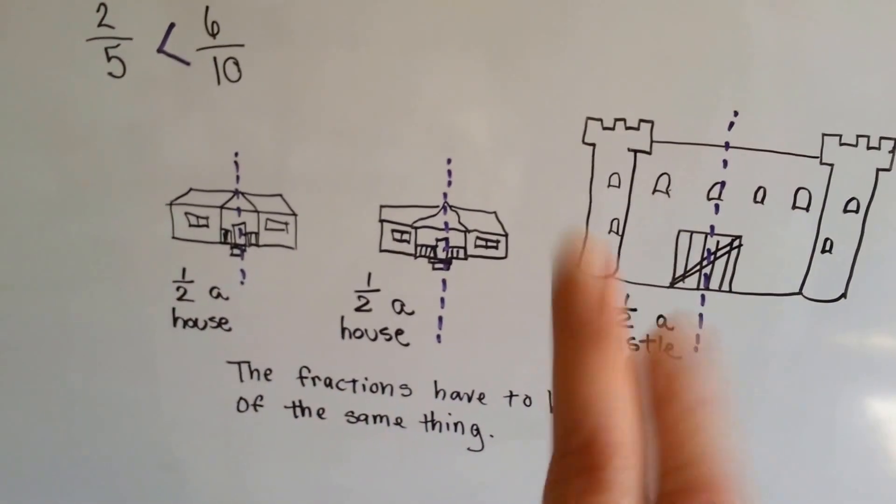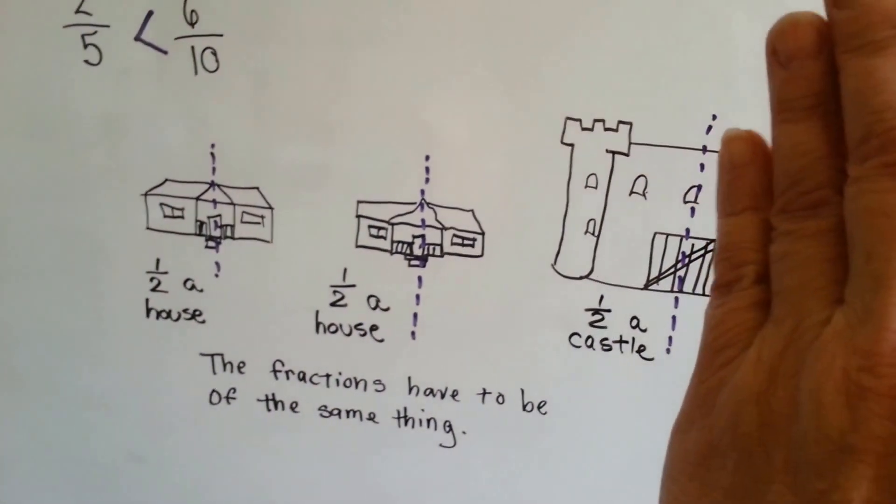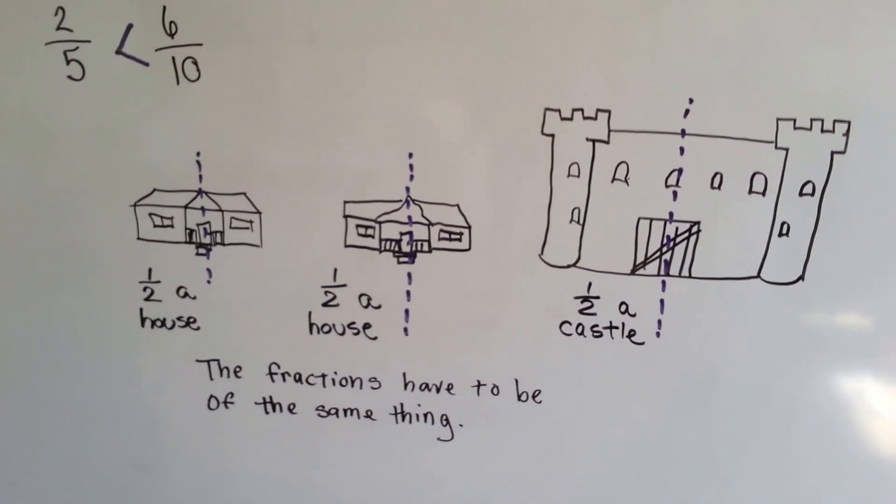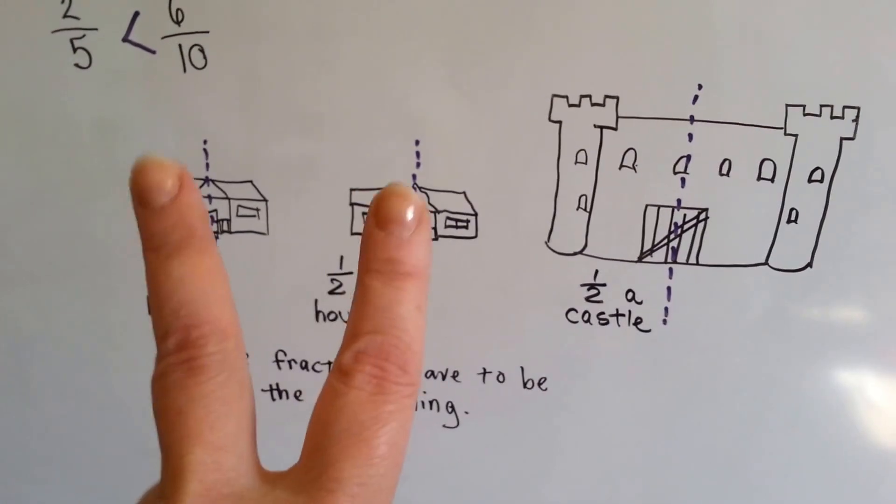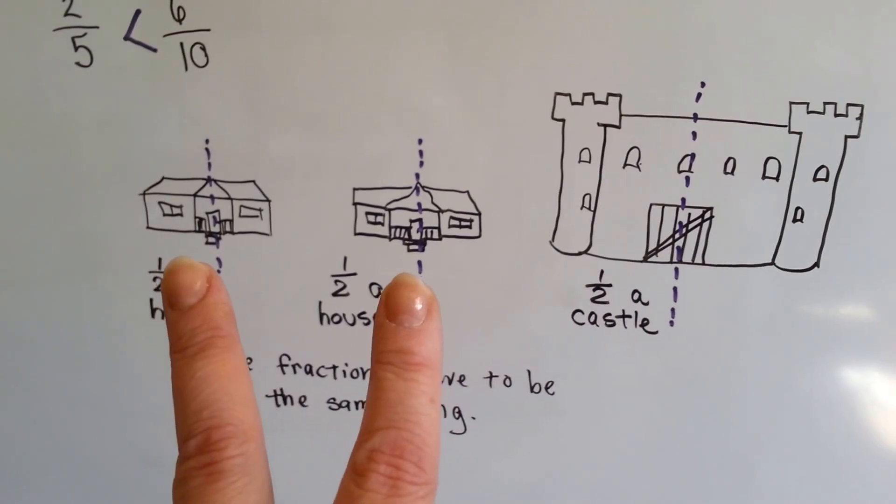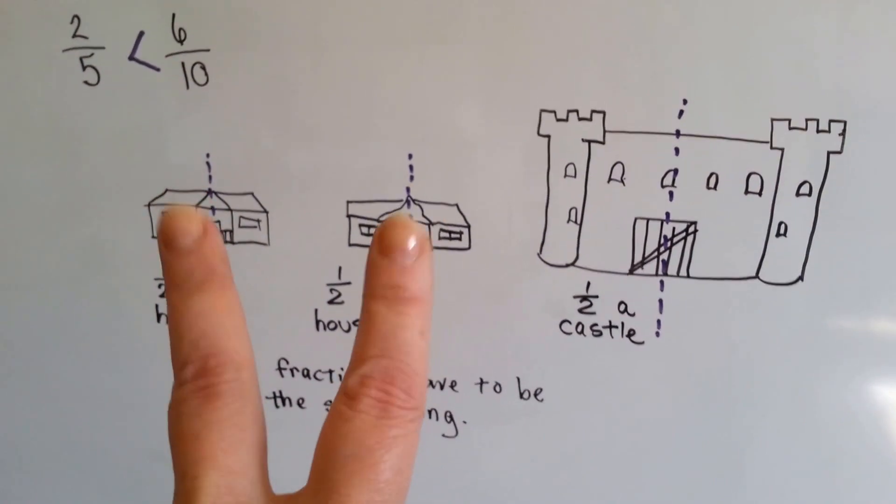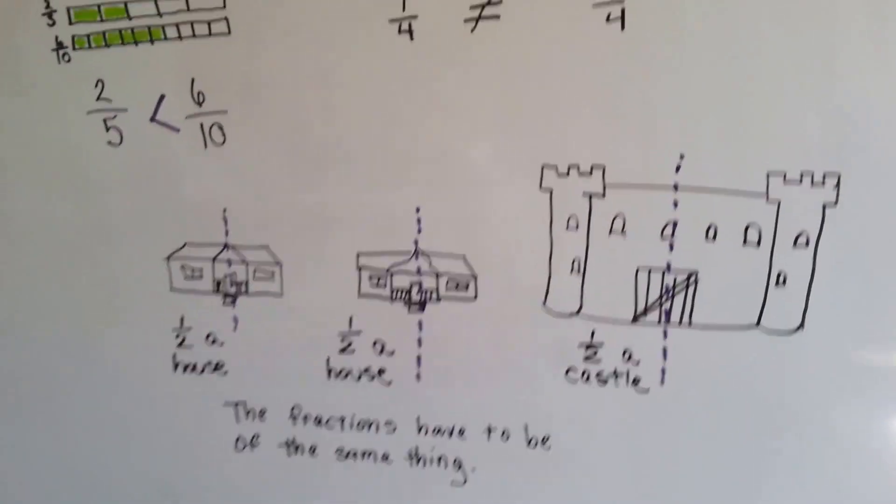But if someone said, I'm going to let you have half, but it turns out it's a castle. Well, that's a lot more than half a house. It's half a castle. So fractions have to be of the same thing to be equal. Half of a house is not the same thing as half of a castle. It's got to be compared to another half house that's just like it.